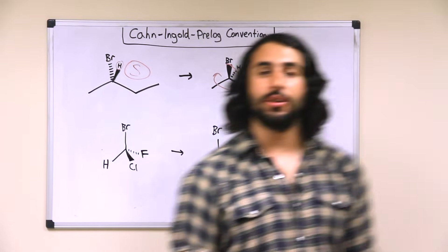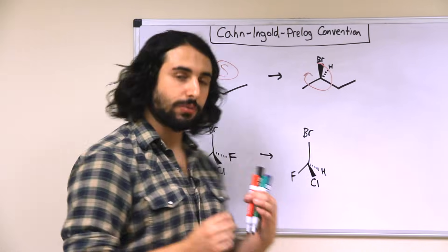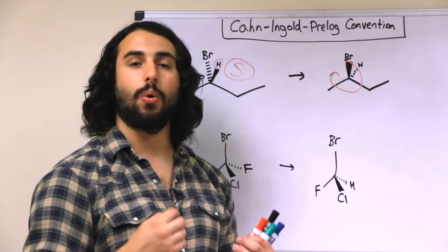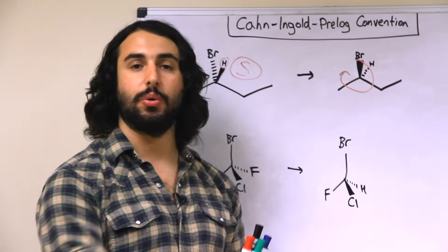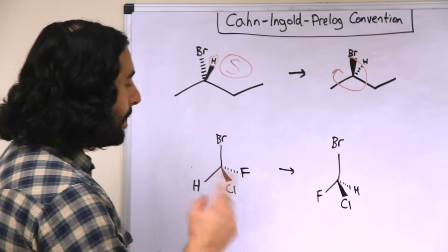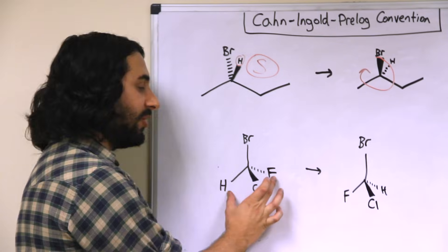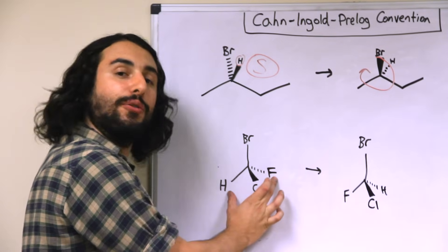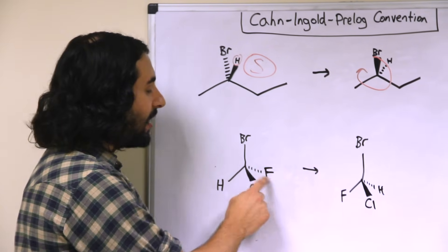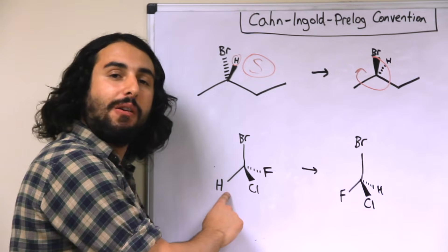Once again, not everyone is comfortable with this kind of reasoning. So we can apply the same rule: if you swap any two groups on a chiral center you will invert the stereochemistry. For example, we can switch the hydrogen and the fluorine — we do that because placing the lowest priority group on the dash bond puts it furthest away from us.